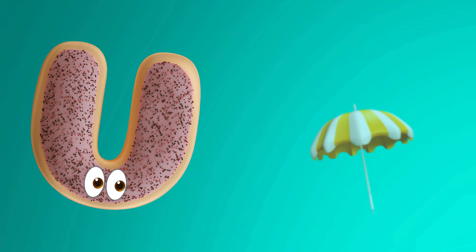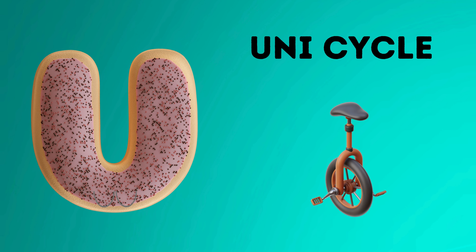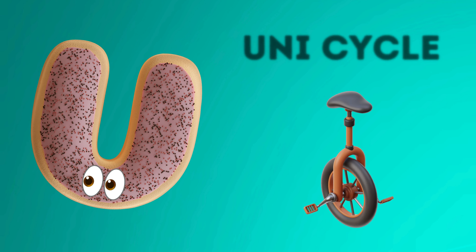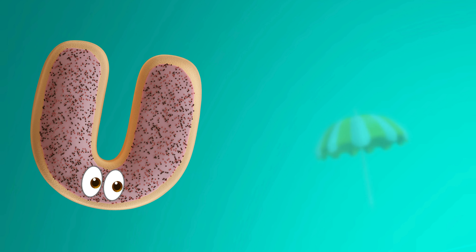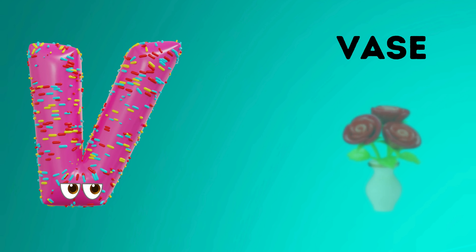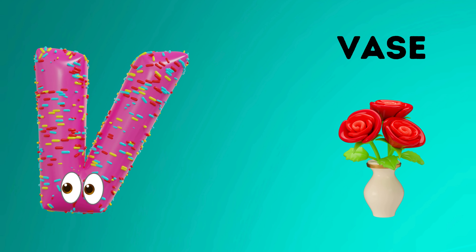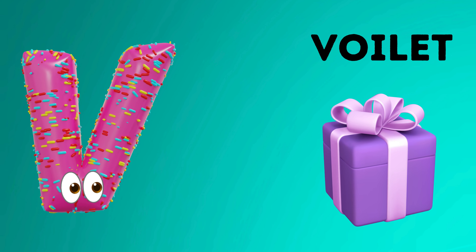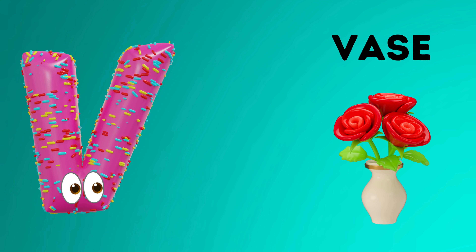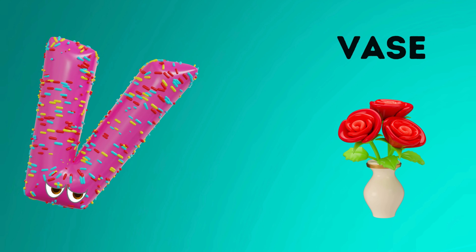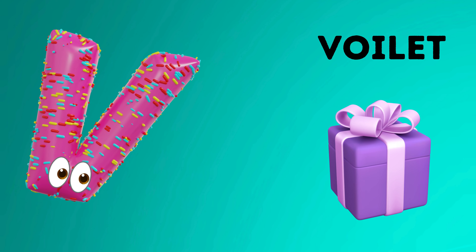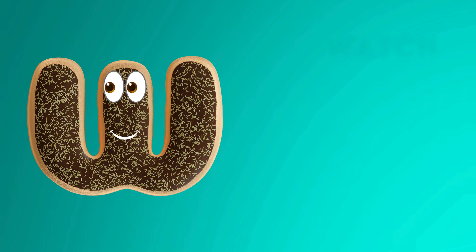U is for umbrella, u-u-umbrella. U is for unicycle, u-u-unicycle. U is for u-u-u-umbrella. U is for u-u-u-unicycle. V is for vase, v-v-v-vase.